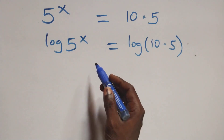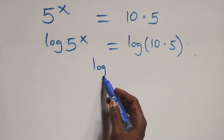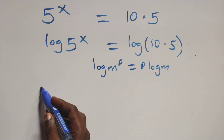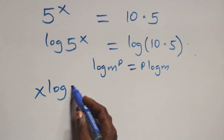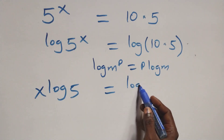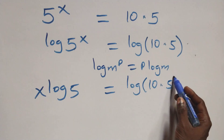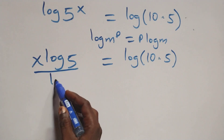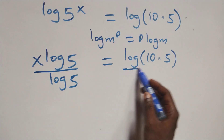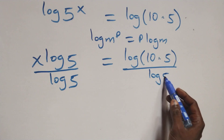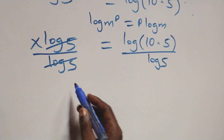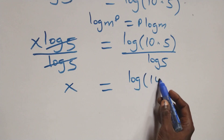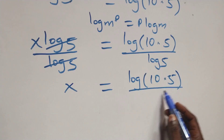Now we apply the power rule of logarithms, where log(m raised to power p) equals p times log(m). So here we have x times log 5 equals log 50. Next, divide both sides by log 5 — log 5 cancels — giving x equals log 50 over log 5.